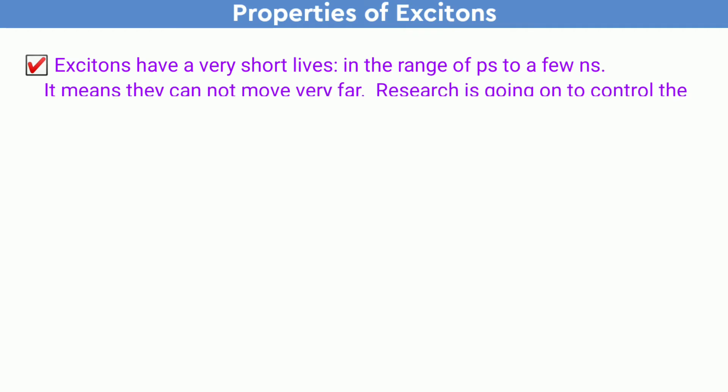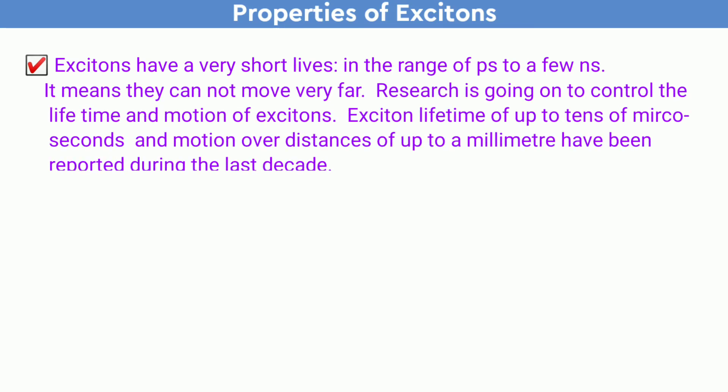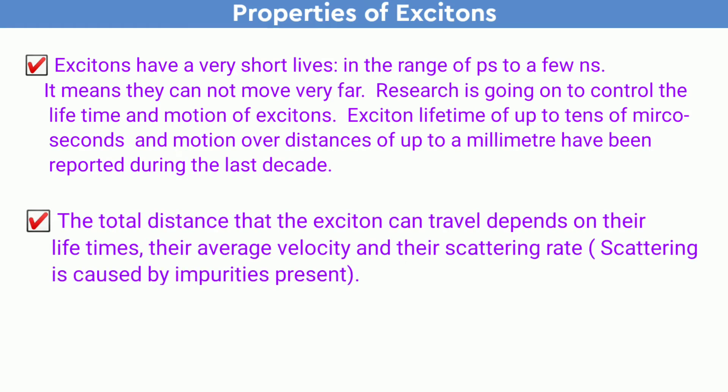Excitons have a very short life in the range of picoseconds to a few nanoseconds, meaning they cannot move very far. Research is ongoing to control the lifetime and motion of excitons. Lifetimes of up to tens of microseconds and motion over distances of up to a millimetre have been reported during the last decade. The total distance that excitons can travel depends on their lifetime, average velocity, and scattering rate with defects and lattice vibrations.